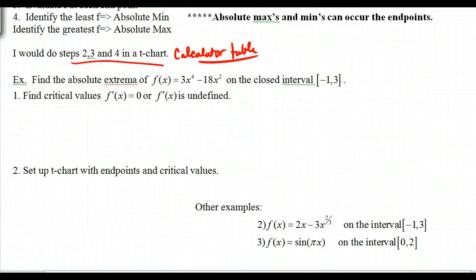So find the absolute extrema of this function on the closed interval from negative 1 to 3. So first of all, we find the critical values. This one won't have any undefined because it's a nice polynomial. f prime of x is equal to 12x to the third minus 36x, which is equal to 0.